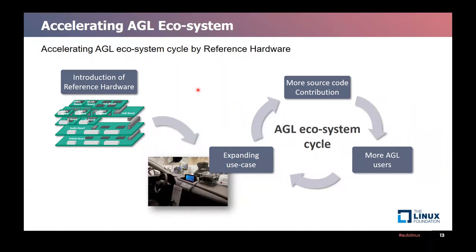This is an overview summary of reference hardware. By accelerating the ecosystem cycle with the introduction of reference hardware, the industry will be able to streamline the development of automotive products. With reference hardware as a starting point, the use cases of AGL are expected to expand, leading to more source code contributions and more users of AGL. AGL has a community, developing tools, documentation, and other information available. We are looking forward to your joining, and the expert group will continue to accomplish its ecosystem cycle.